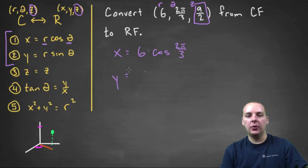And the Y will be 6 times the sine of 2π over 3. And of course Z is the same, so our Z will be 9 halves.